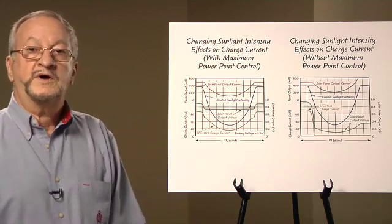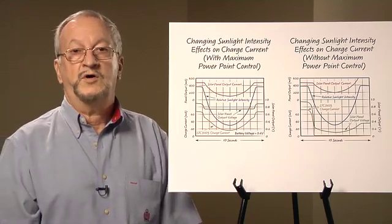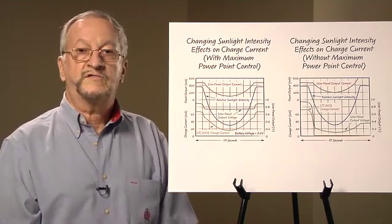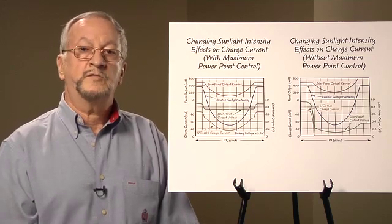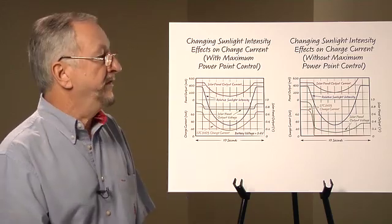It accomplishes this by reducing the LTC 3105 output charge current to prevent the solar panel from collapsing to near zero volts, as shown on the graph on the right.